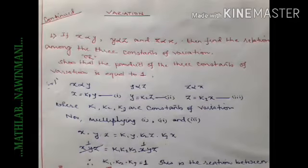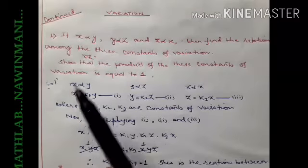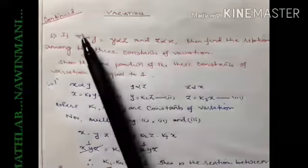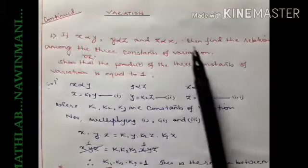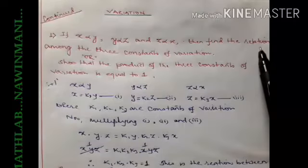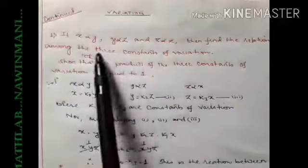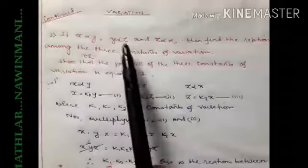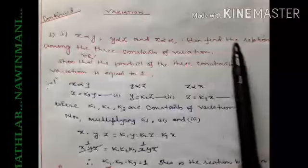Good morning children. We will do a special type of problem on variation today. The question has three variations: x directly varies with y, y directly varies with z, and z directly varies with x. You have to find the relation between the three constants of variation — since there are three variations, there will be three constants: k1, k2, and k3.